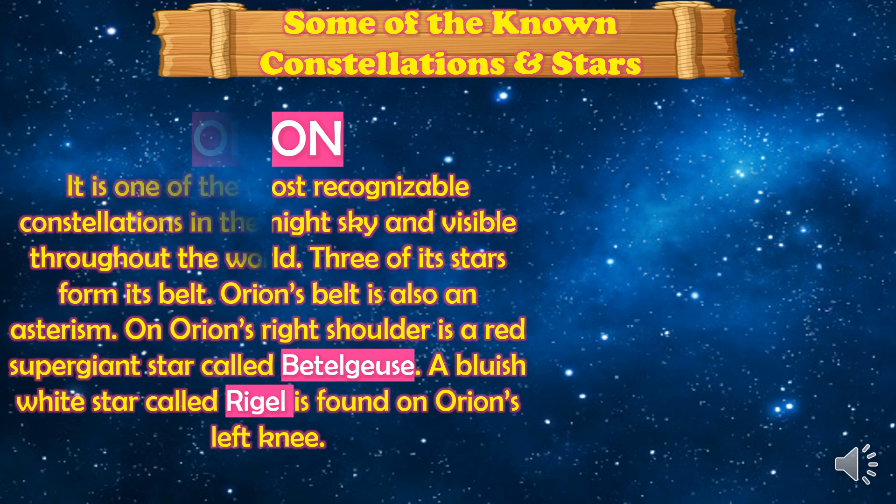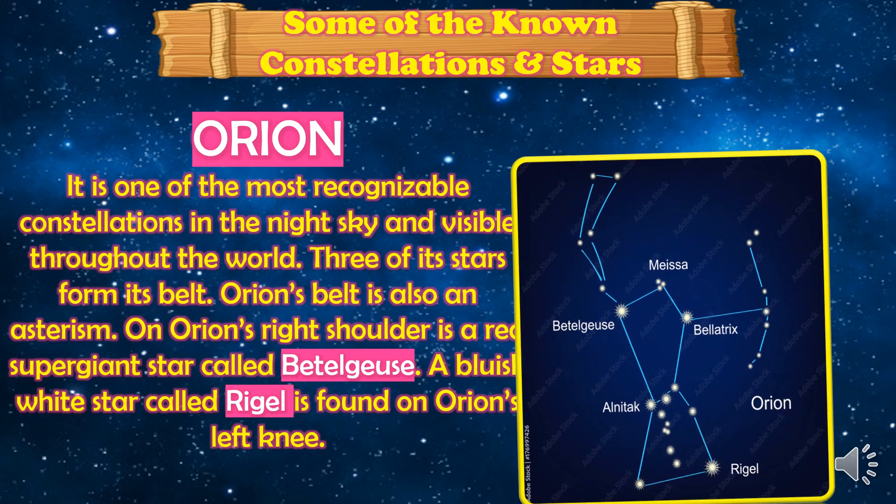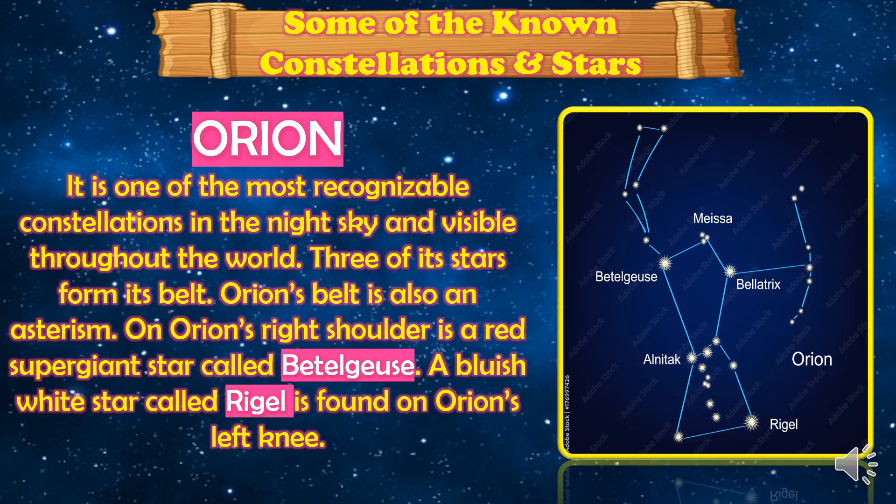Then we have Orion. It is one of the most recognizable constellations in the night sky and is visible throughout the world. Three of its stars form its belt; Orion's belt is also known as an asterism. On Orion's right shoulder is a red supergiant star called Betelgeuse, and a bluish-white star called Rigel is found on Orion's left knee.